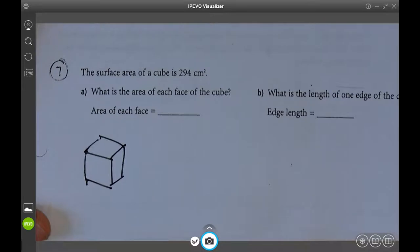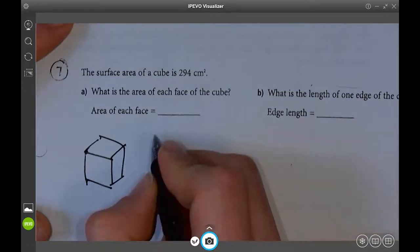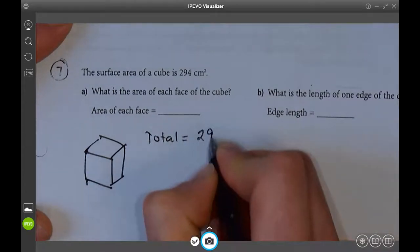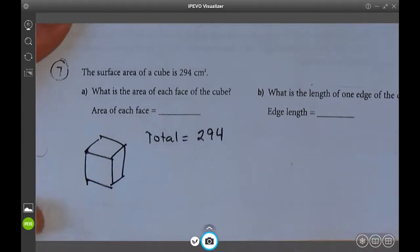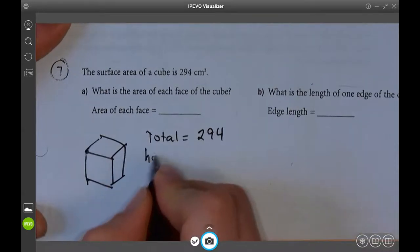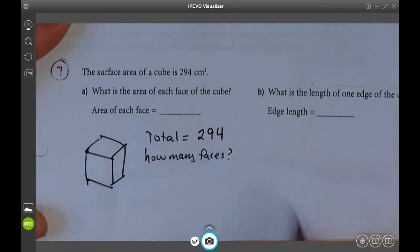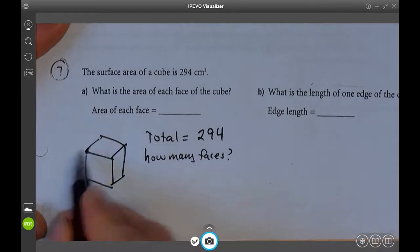So what's each face of a cube? Well, what's the total surface area? Total is 294. How many faces does this thing have? Each face is going to be the same.